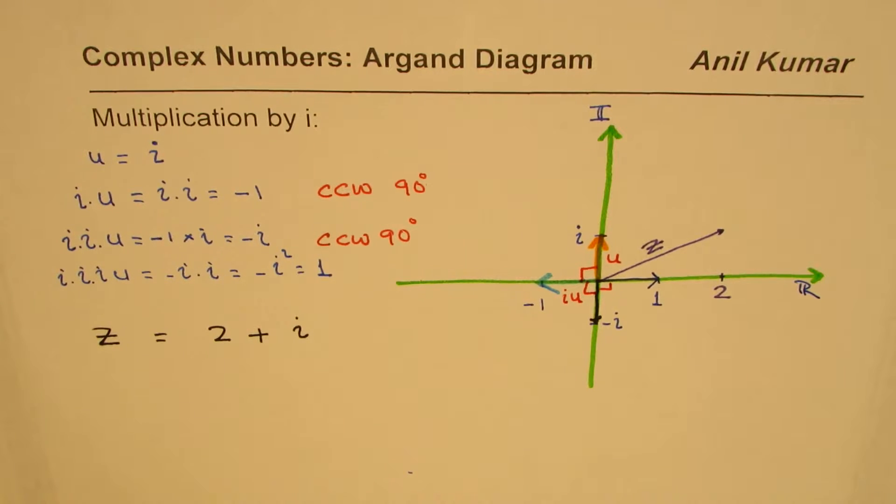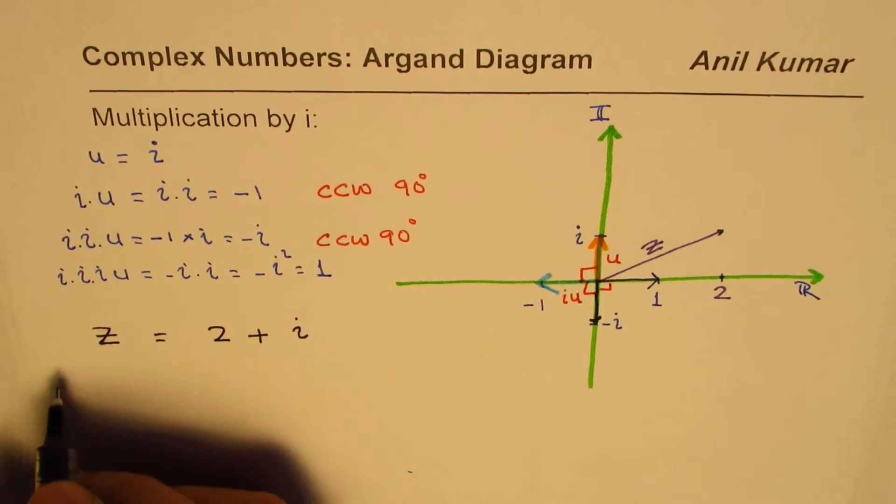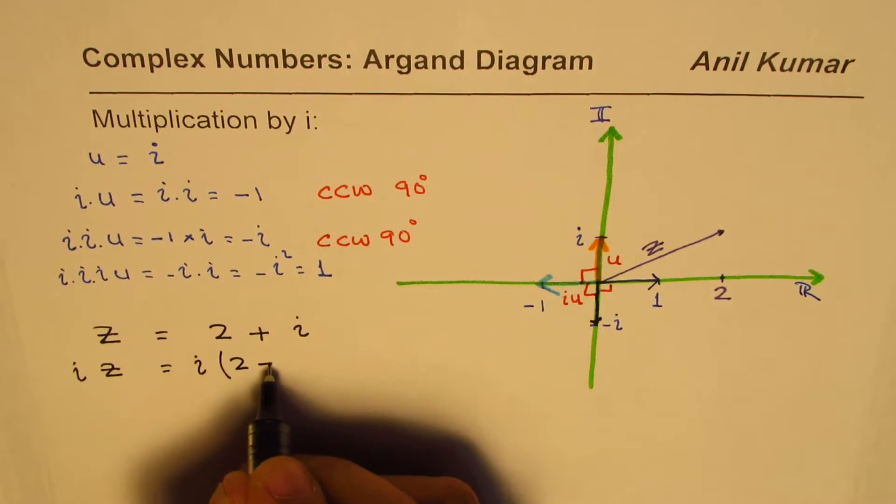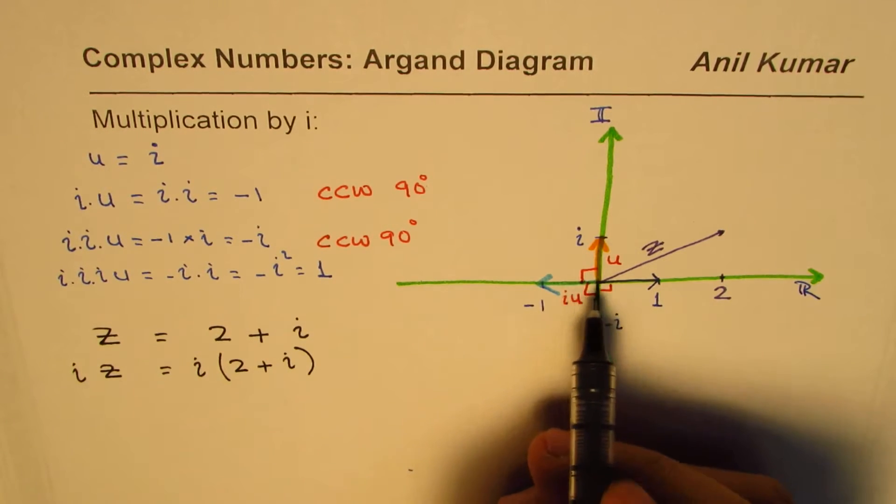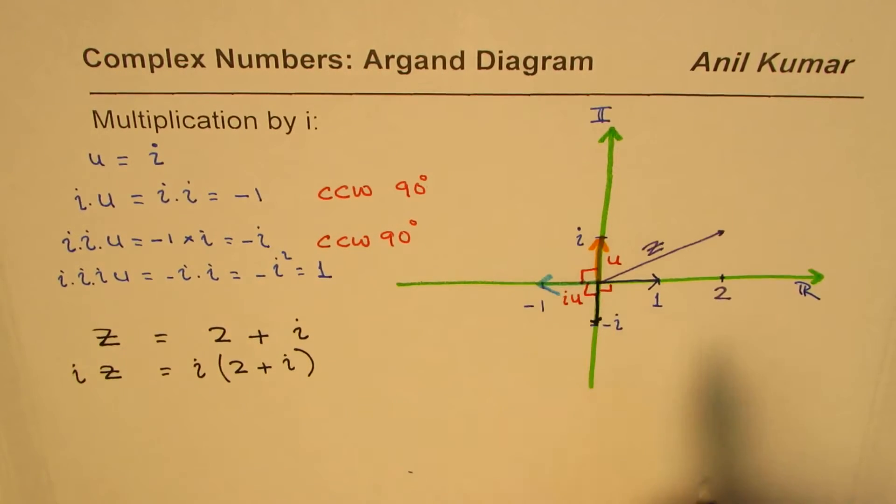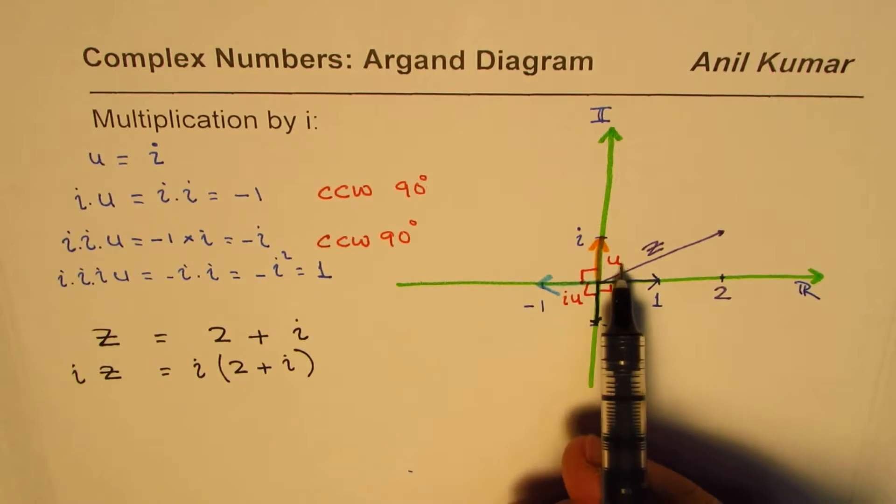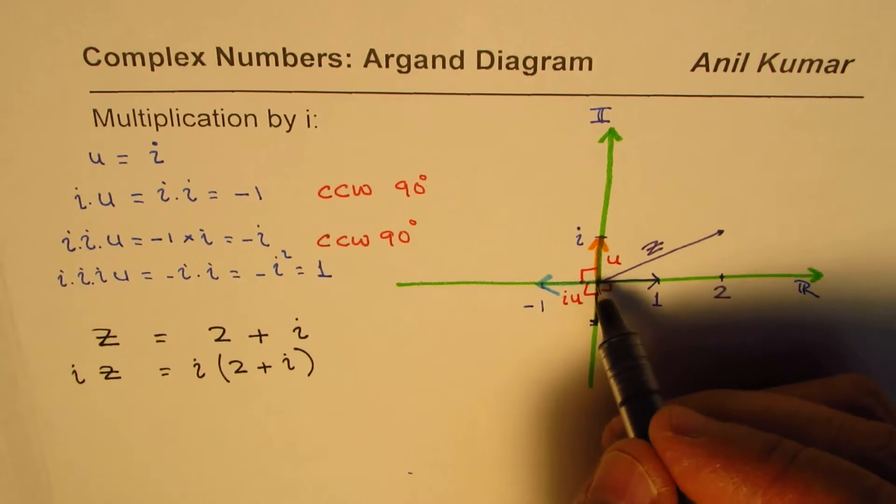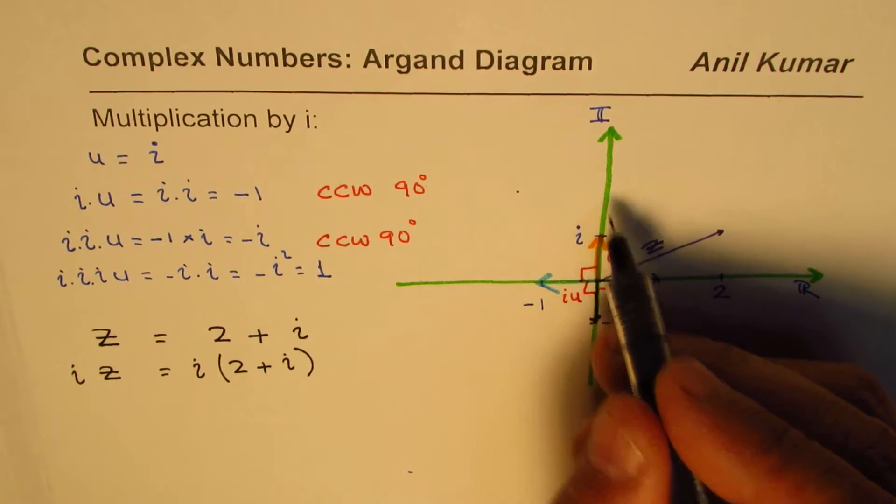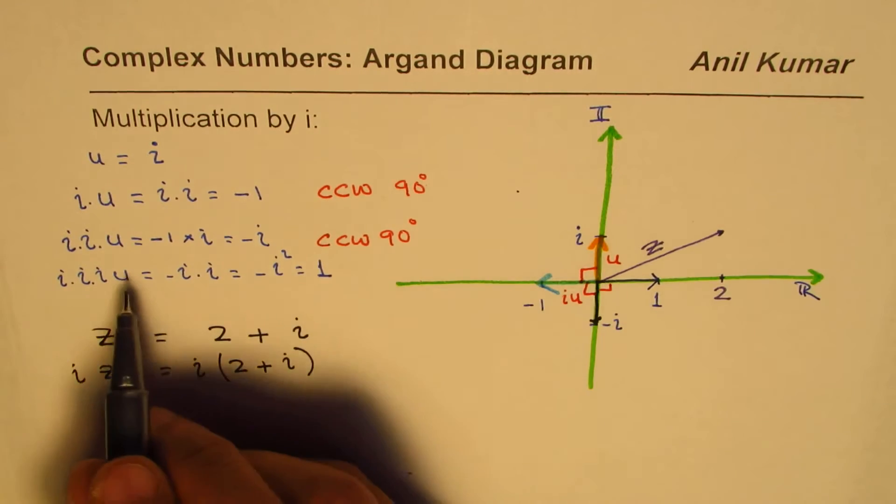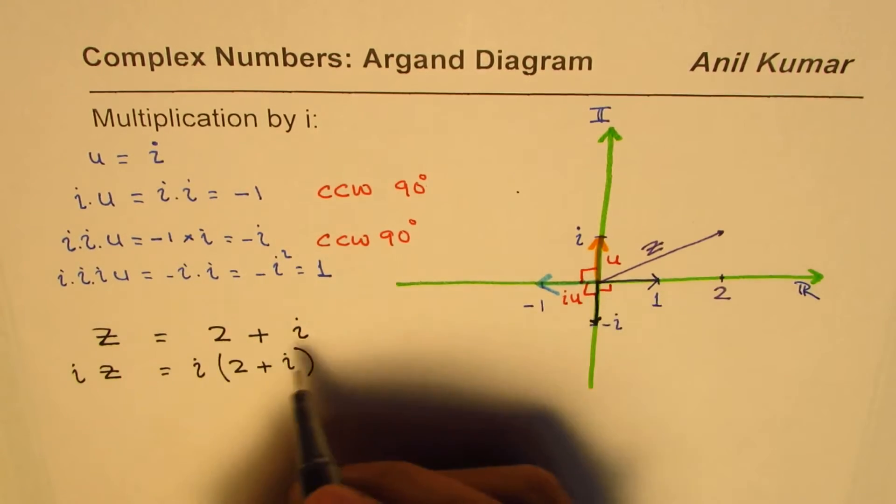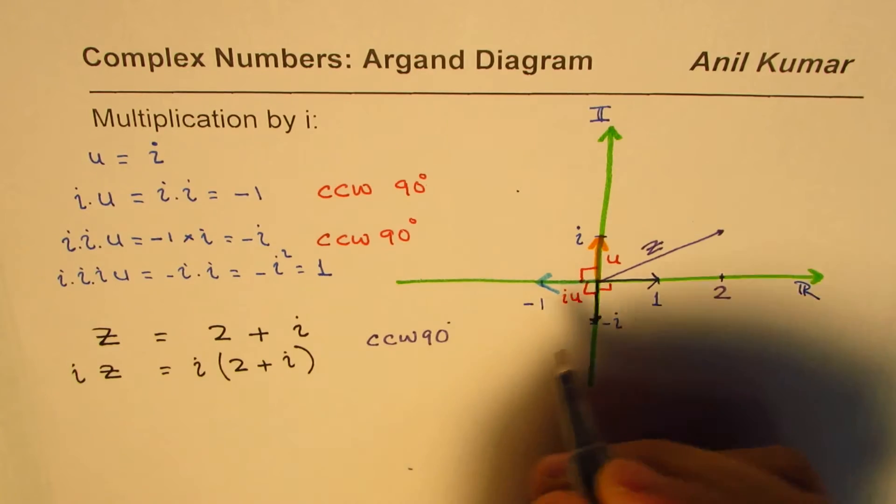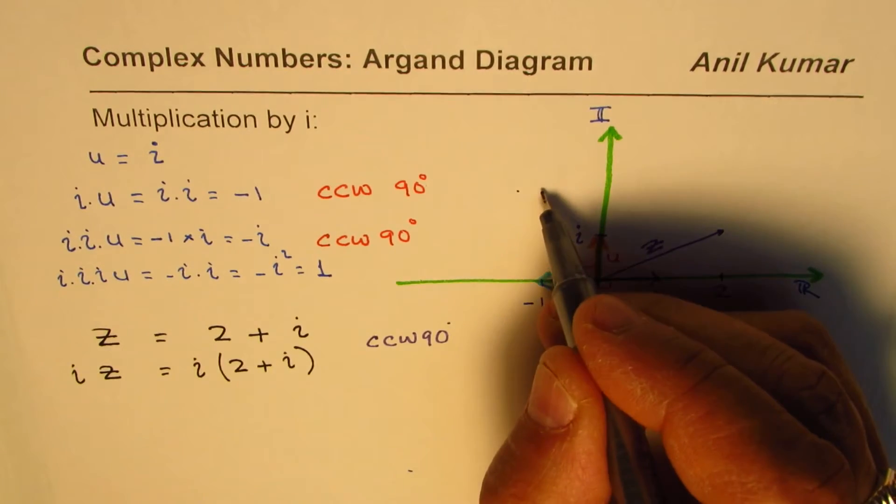Now, if I multiply this complex number by i, what do I get? I will get i times (2 plus i). Now as per our hypothesis, we know it should actually rotate counterclockwise by 90 degrees. So let's see what happens. According to the rule which we understood, it should undergo counterclockwise 90 degrees.